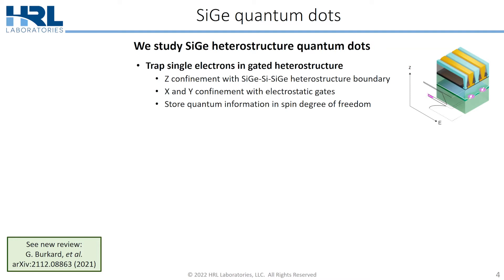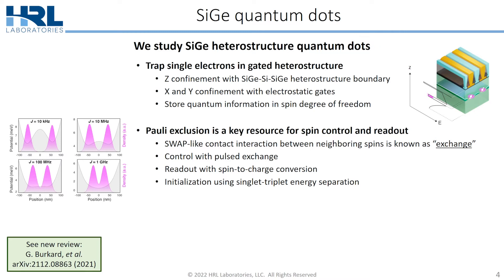We study devices called silicon heterostructure quantum dots at HRL. These devices trap single electrons in gated heterostructures: electrons are confined in the z-direction by the silicon heterostructure boundary, and in the x and y directions with electrostatic gates placed on top of the device. We use the spin degree of freedom of the electron to store quantum information. The Pauli exclusion principle is an important resource for control — it manifests as a swap-like contact interaction between neighboring spins, known as exchange. Exchange can be used to control, readout, and initialize spins.